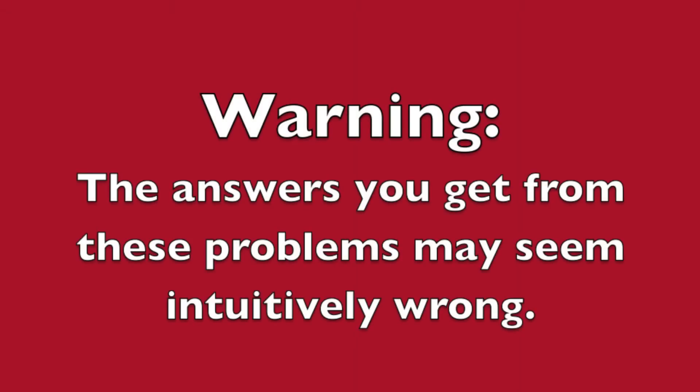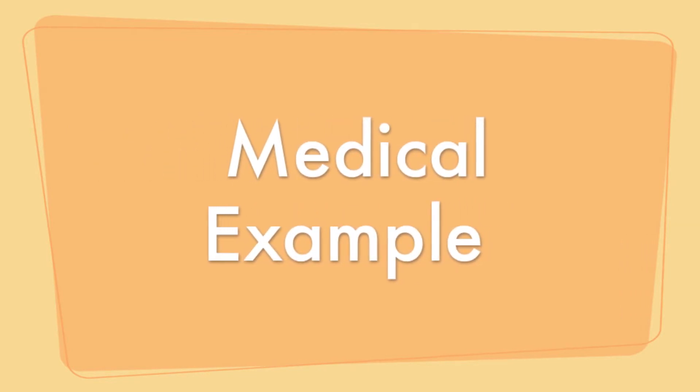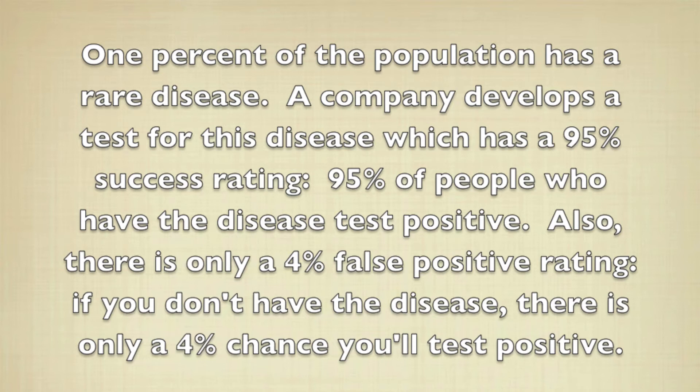One thing to keep in mind though, the problems may give you answers that seem wrong. For an example of this, let's look at this problem here. One percent of the population has a rare disease. The company develops a test for the disease which has a 95% success rating. It means 95% of the people who have the disease test positive.